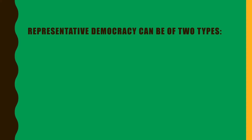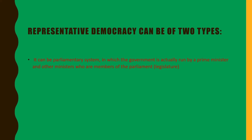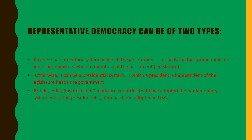Representative democracy can be of two types. It can be a parliamentary system, in which the government is actually run by a prime minister and other ministers who are members of the parliament. Otherwise, it can be a presidential system, in which a president, independent of the legislature, heads the government. Britain, India, Australia and Canada have adopted the parliamentary system, while the presidential system has been adopted in the USA.